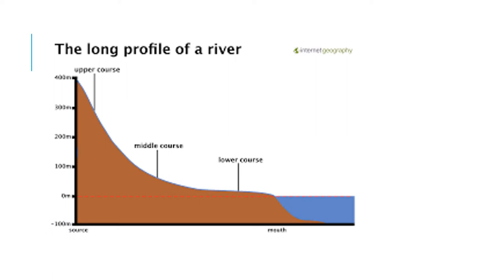The long profile of a river is shown here. Put simply, all it means is the journey that a river takes from its source, which will be up here — the source is where the river starts — to its mouth, which is down here. The mouth is where the river spills out into either the lake or the sea, in other words where the river finishes. So the long profile is the journey from the source to the mouth; it's basically the length of the river.